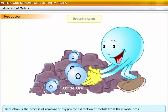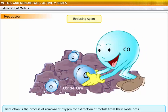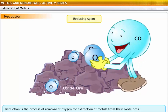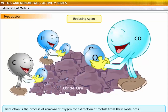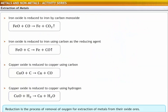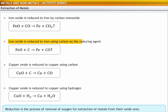The common reducing agents used for reduction of metal oxides are carbon monoxide, carbon and hydrogen. For example, iron oxide is reduced to iron by carbon monoxide. Iron oxide is also reduced to iron using carbon as the reducing agent.